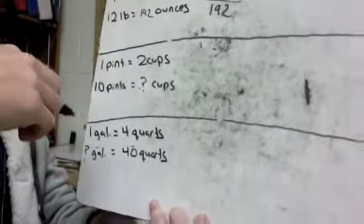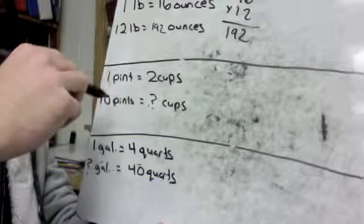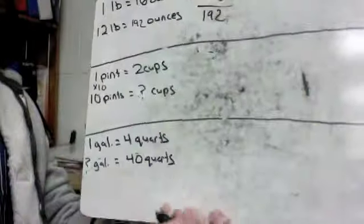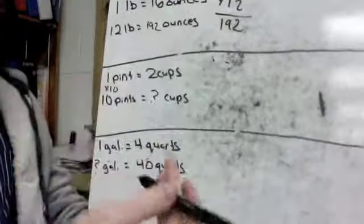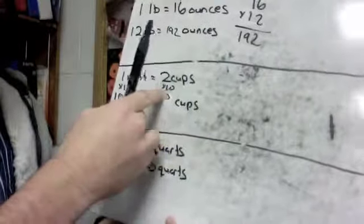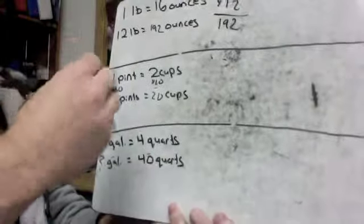Now I'm going to look at this one and just see really easily here that we have 10 times more pints here. So I'm just going to put times 10. To get from one pint to 10 pints is 10 times as much. So if I do the same thing, make the other one 10 times as much, 2 times 10 is going to be 20 cups.